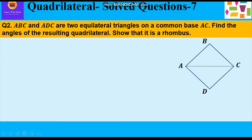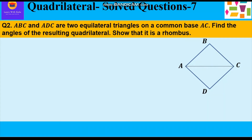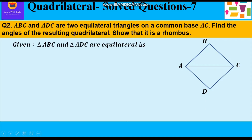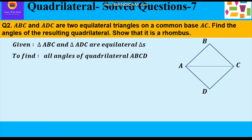Now let's take up the second question. Triangle ABC and triangle ADC are two equilateral triangles on a common base AC. Find the angles of the resulting quadrilateral and show that it is a rhombus. Given: triangle ABC and triangle ADC are two equilateral triangles having the common base AC, as you can see in the given figure. We have to find all the angles of quadrilateral ABCD and further prove that it is a rhombus.